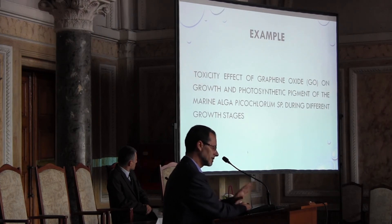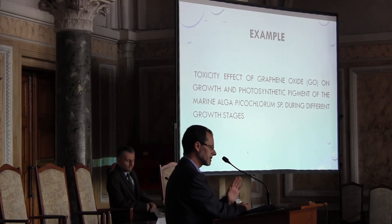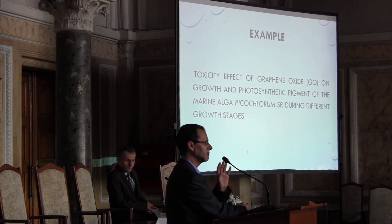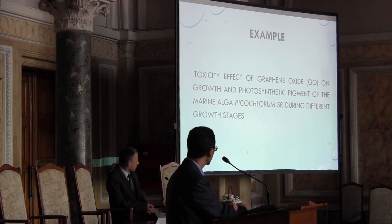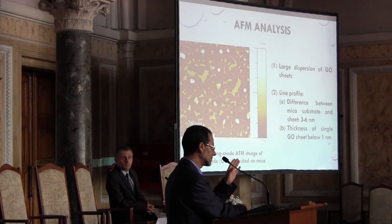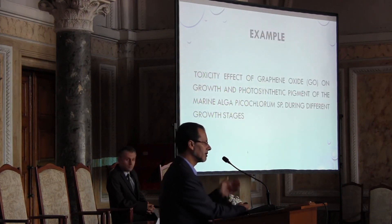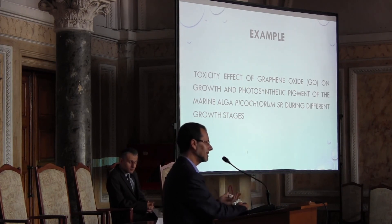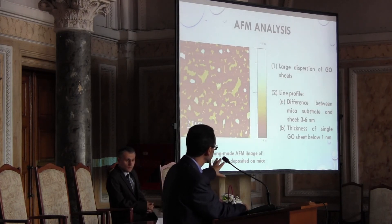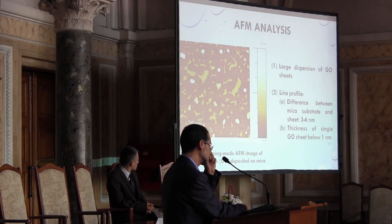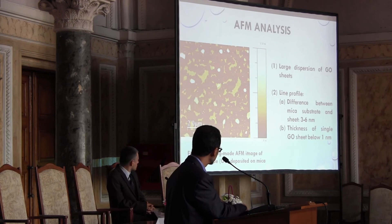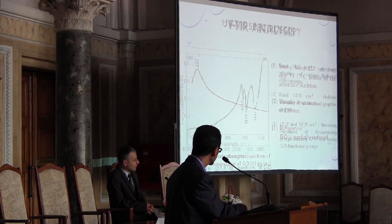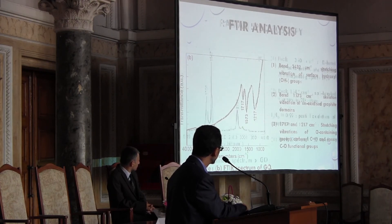We tested conventional and commercial nanomaterials already on the market and used in cosmetics—such as TiO₂, ZnO, hematite, and Fe₃O₄—to assess their effect on algae growth. We also studied graphene oxide, since people claim graphene is not toxic. We prepared graphene oxide and characterized it using Raman spectroscopy, FTIR, and UV-Vis spectroscopy to verify sample quality.